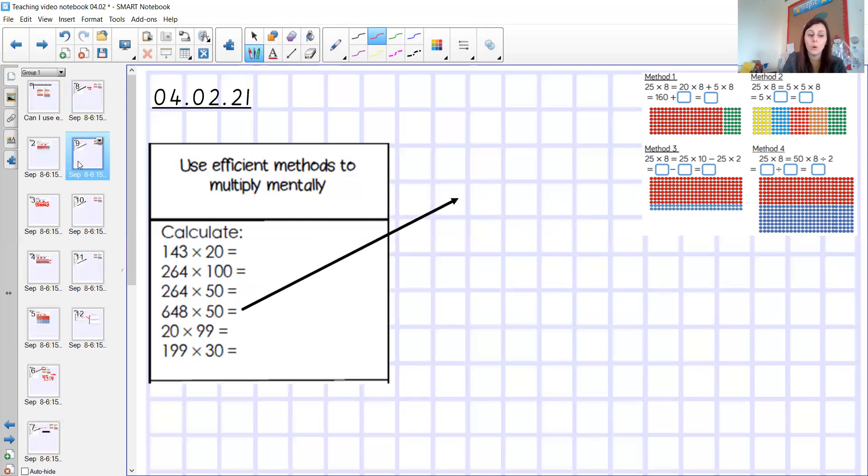If we have a quick look at number four, I possibly, for this one, would go back to what I did for number two here. And I would do 648 and I would multiply it by 100. So I'd be using this method again here, method four. And then I would find my answer to that and then I would divide it by two because it's a lot easier to multiply by 100 than it is 50.